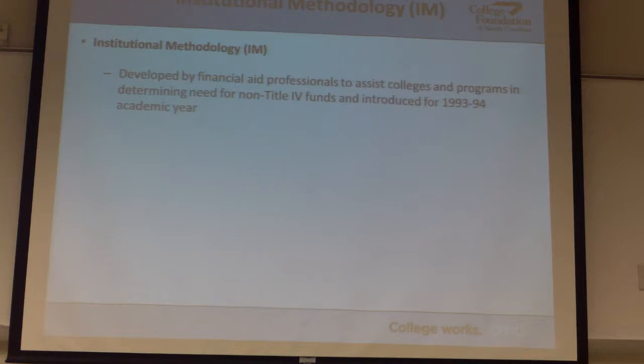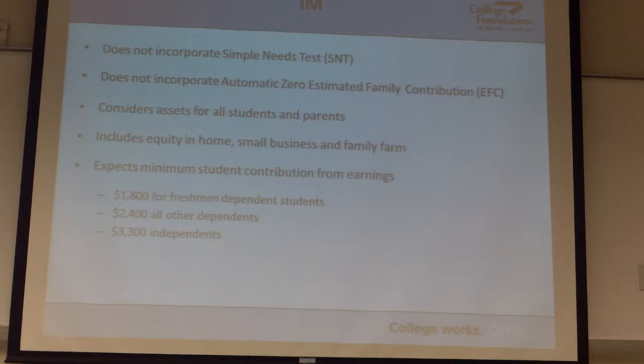The difference is we don't do the simplified needs test. We know that we have a lot of business owners who have negative adjusted gross income — they show businesses with losses. But if you look at what the cash balance is in their business, they have millions. So we don't auto-zero anyone just for that.